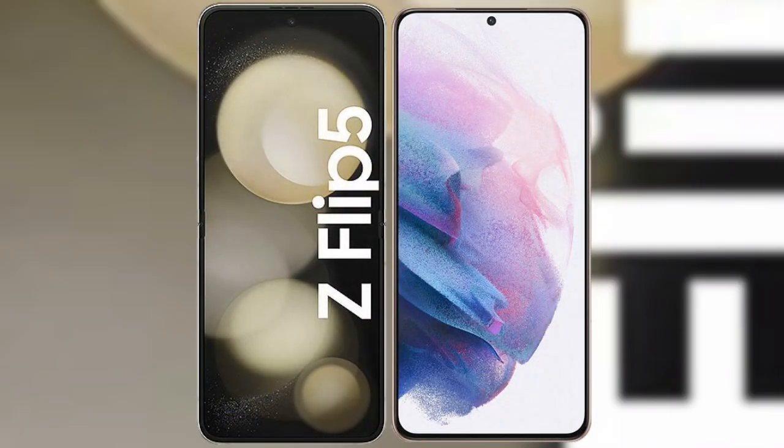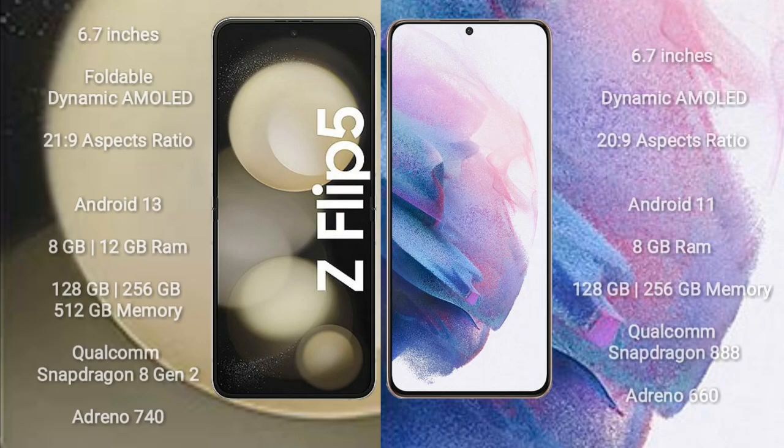I will compare the new Samsung Galaxy Z Flip 5 with Samsung Galaxy S21 Plus. The Z Flip 5 comes with a 6.7-inch foldable dynamic AMOLED display with a 22:9 aspect ratio, while the Samsung Galaxy S21 Plus comes with a 6.7-inch dynamic AMOLED display with a 20:9 aspect ratio.